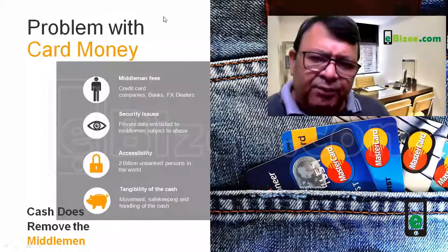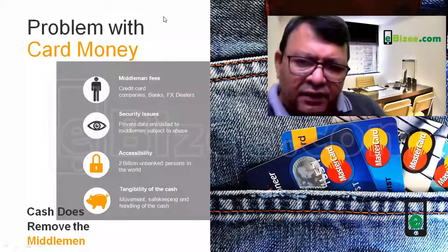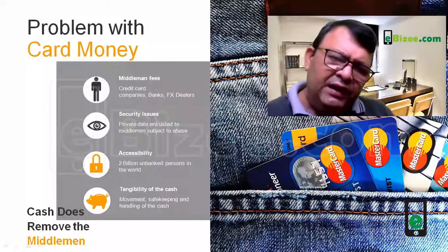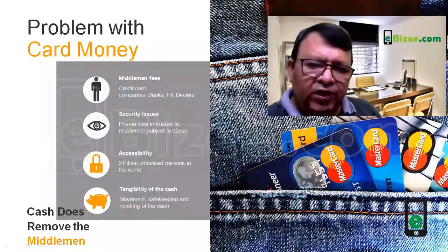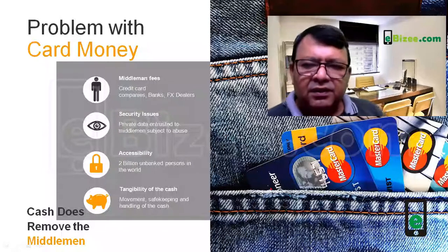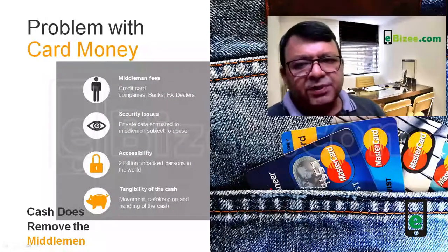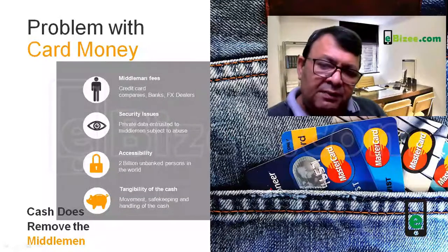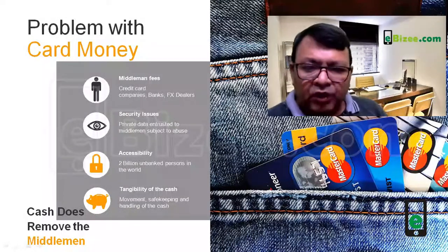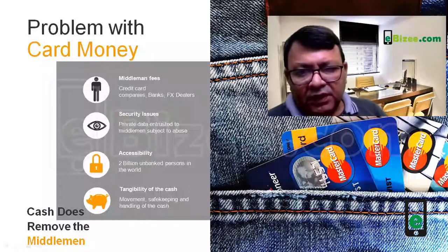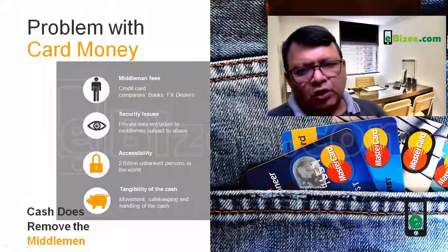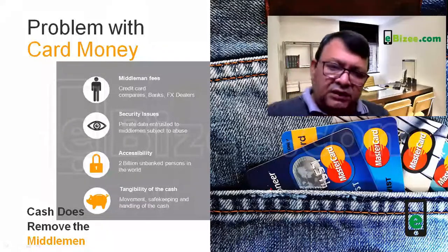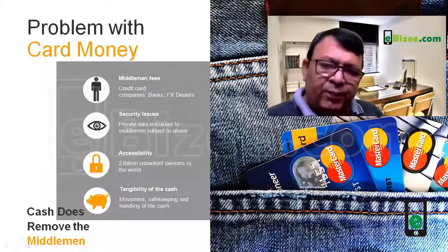It is very important to understand why we need cryptocurrencies. What is the rationale behind cryptocurrencies becoming so popular that the price of the most famous cryptocurrency, Bitcoin, is so high? It is becoming the most sought-after digital currency. There should be some reason. So what is the problem?